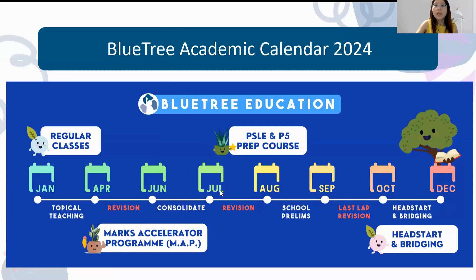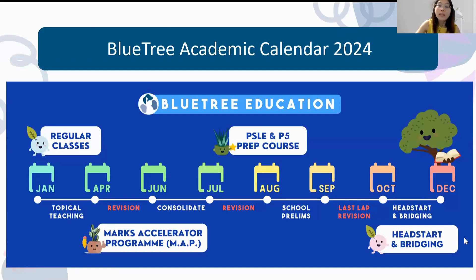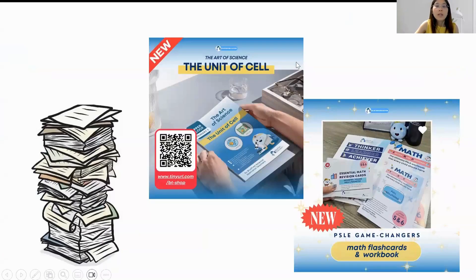Based on the timeline, July to August is revision, August to September is all the prelims, and September to October is your last lap of revision. It's actually a very short year left for P6. For P5 students, you still have time — you'll have a head start going into next year. This is just a rough timeline for 2024.